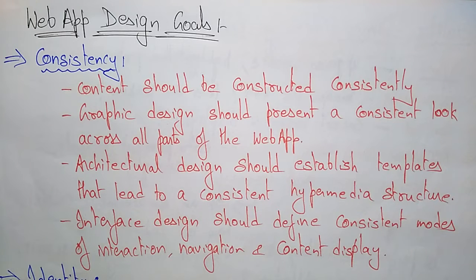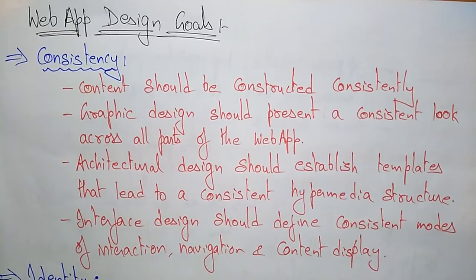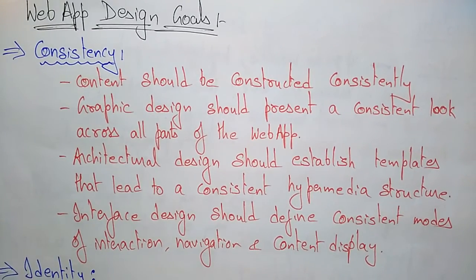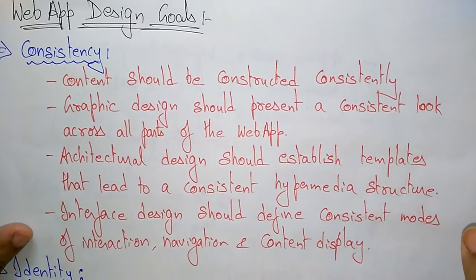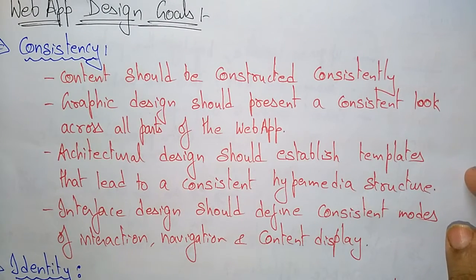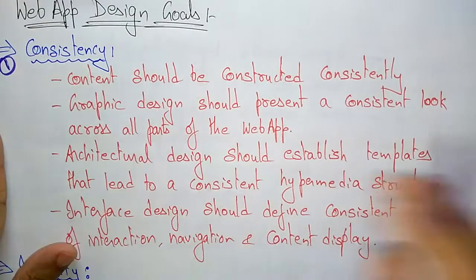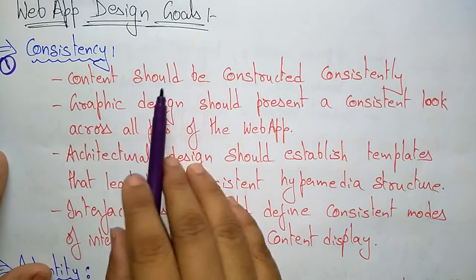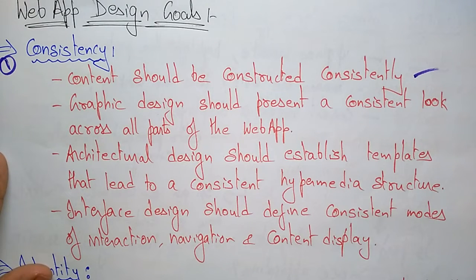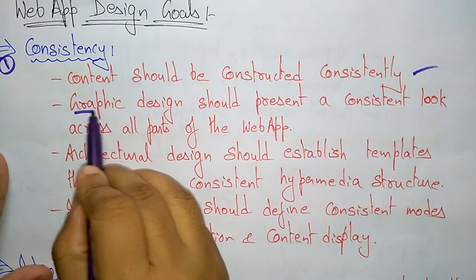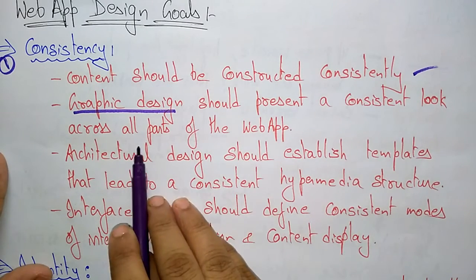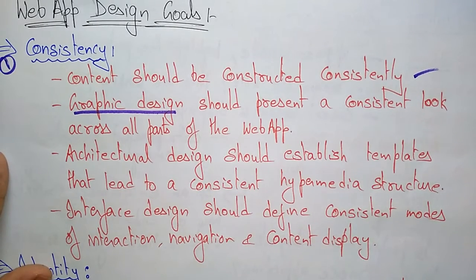Coming to the next topic: the web app design goals. The first goal is consistency. Whatever app you are using, whether a web app or user applications, the main thing you have to achieve is the consistency goal. In web design, content should be constructed consistently, and whatever graphic design you are using in the web app should present a consistent look across all parts of the web app.